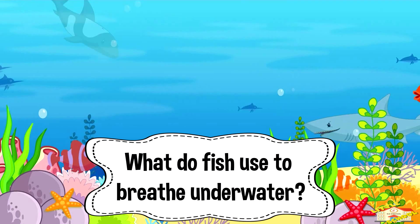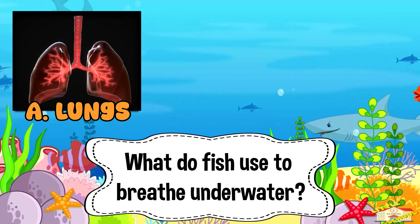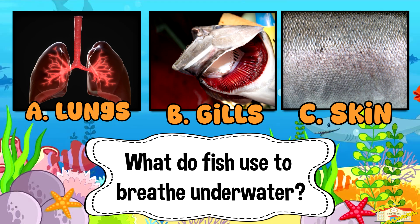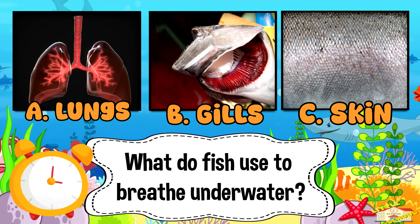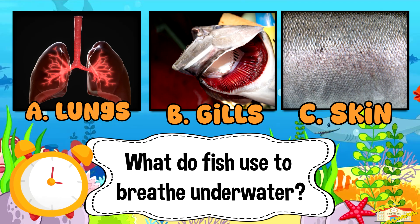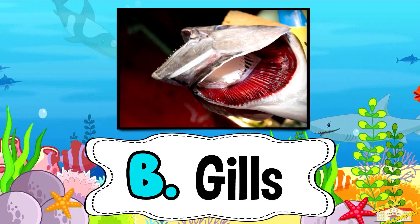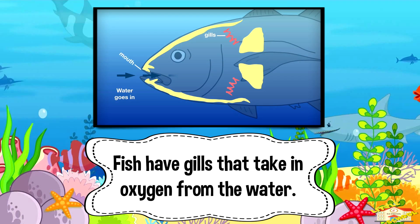What do fish use to breathe underwater? A: lungs, B: gills, or C: skin? Five, four, three, two, one. And the answer is B: gills. Fish have gills that take in oxygen from the water.